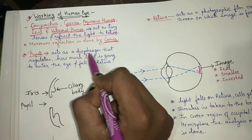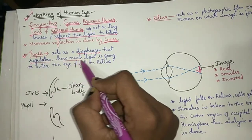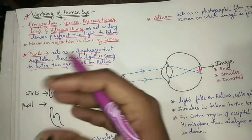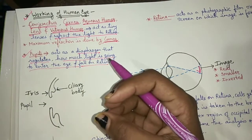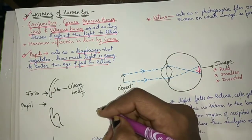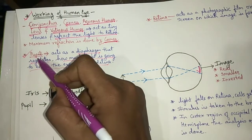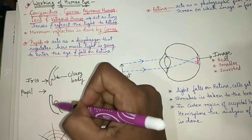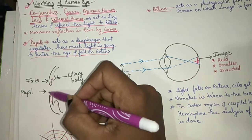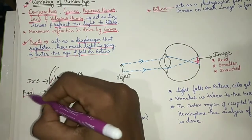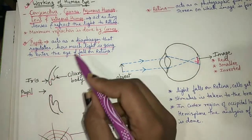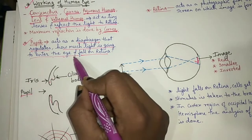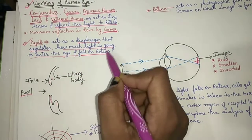The pupil acts as a diaphragm that regulates how much light enters the eye and falls on the retina. The pupil is the gap between the iris and the ciliary body. This region regulates and decides how much light enters the eye and falls on the retina.